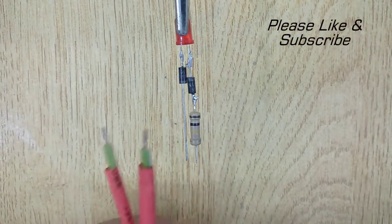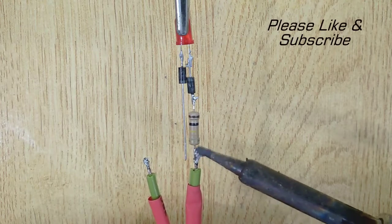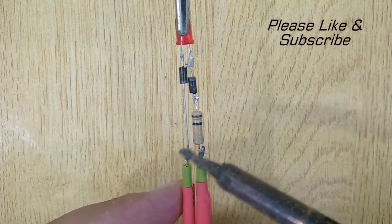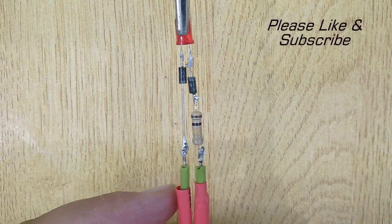And at last, solder the first wire with the resistor and the second wire with the diode. And you are done.